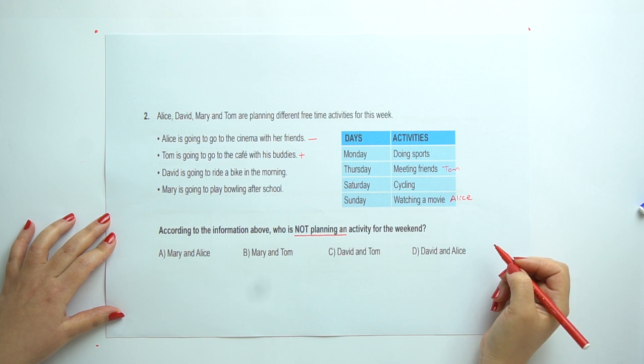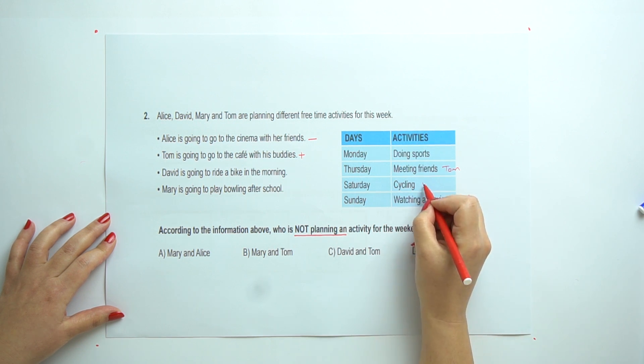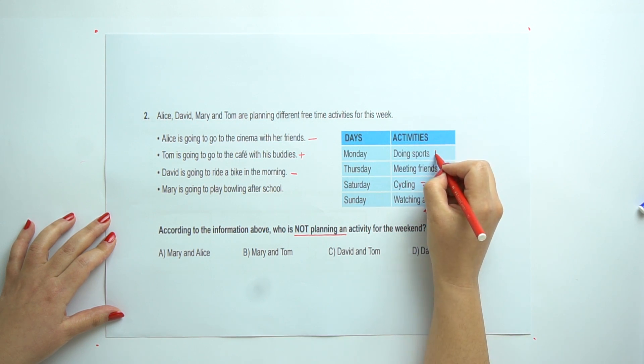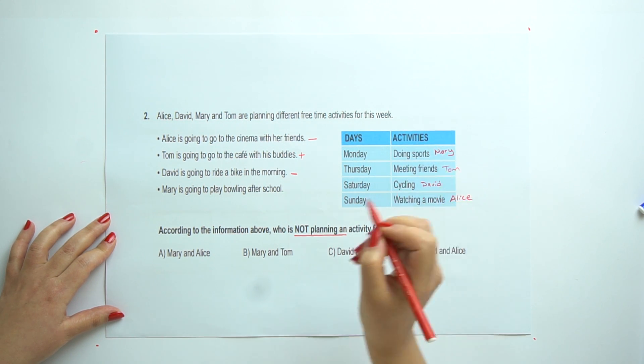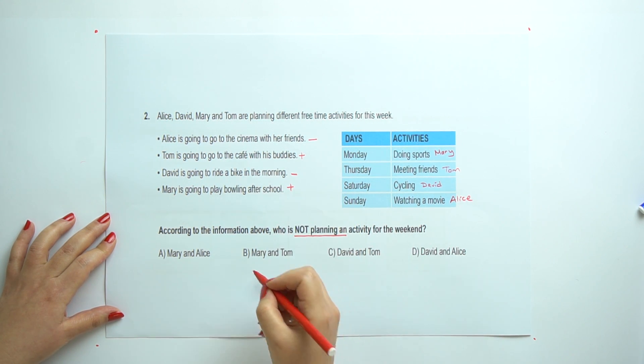On the weekday. On the weekday. David is going to ride the bike in the morning. Yes. Cycling. David. This is at the afternoon. And, Mary is going to play bowling after school. Yes. This is sports. So, the answer is Tom and Mary.